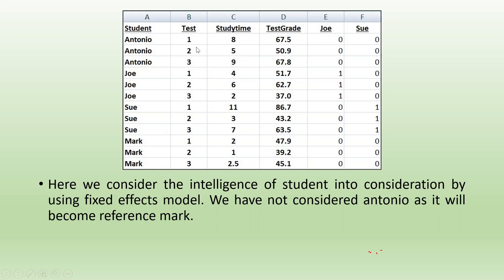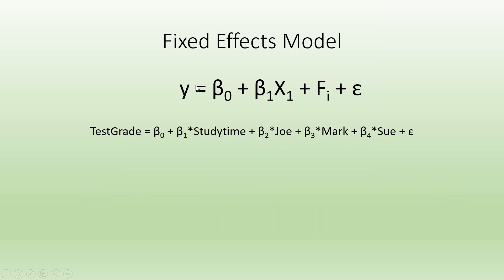Now here 3 tests are there — can you guess how many dummies will be there? Right, 2 dummies will be there. So in fixed effects models for considering the cross-section effect, y is equal to beta 0 plus beta 1 x1 plus phi_i plus epsilon. So test grade equals beta 0 plus beta 1 into study time plus beta 2 Joe plus beta 3 Mark plus beta 4 Sue plus epsilon. Antonio is not included to avoid the dummy variable trap.